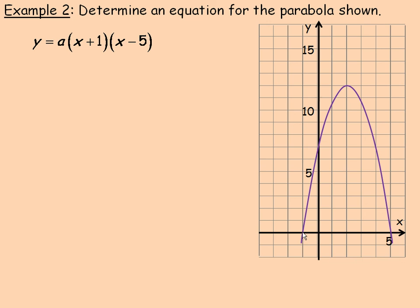The x-intercepts are negative 1, and so one factor here in intercept form would be x plus 1. The other intercept is at 5, so x minus 5 is the other factor in the intercept form. The only thing we have to determine now is the a, the stretch factor.